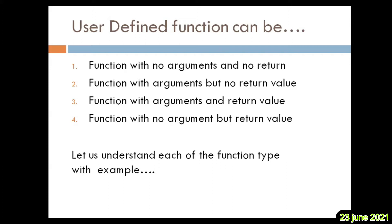We also saw in the previous class that users are going to define functions as per their requirements. When we write a function for a specific utility, arguments need to be provided so the function can work on them and return a value. But there are situations where you may not pass any argument or return any value. Therefore, there are four cases: your function may have arguments as well as a return value, or may not have both, or may have arguments but no return value, or may have a return value but no argument.